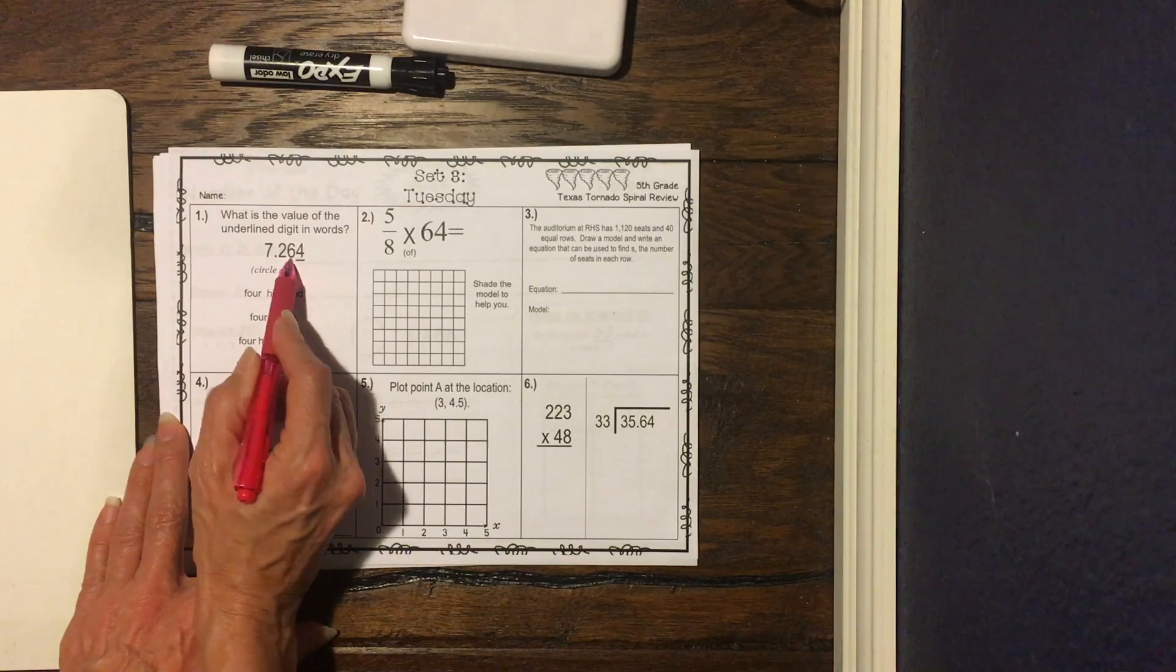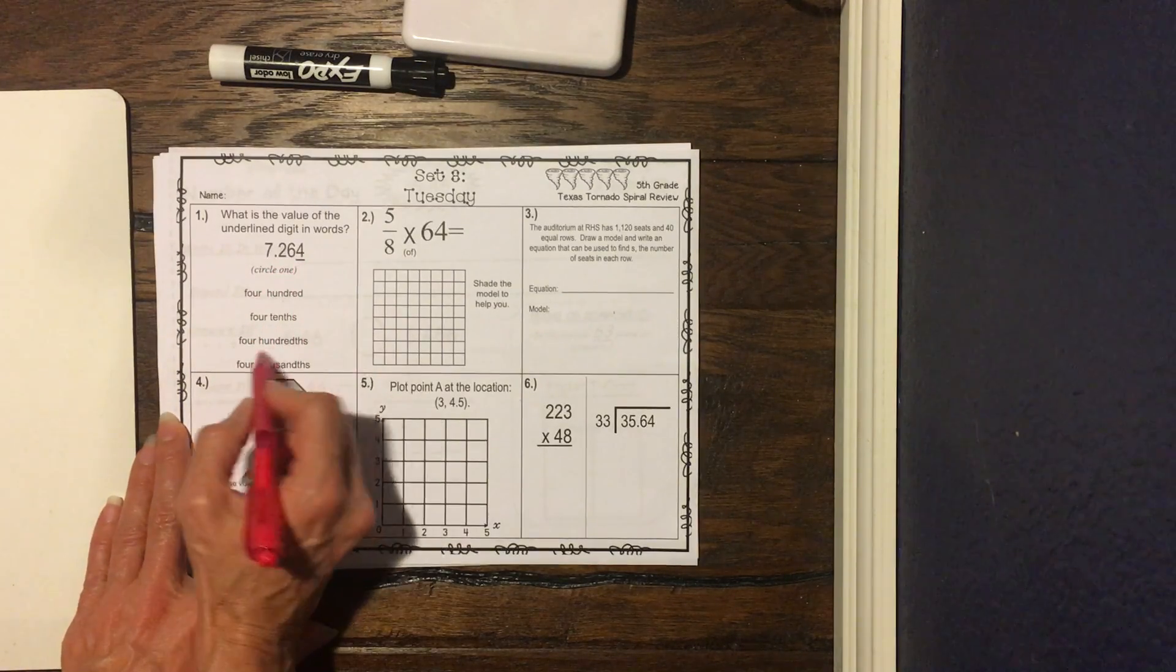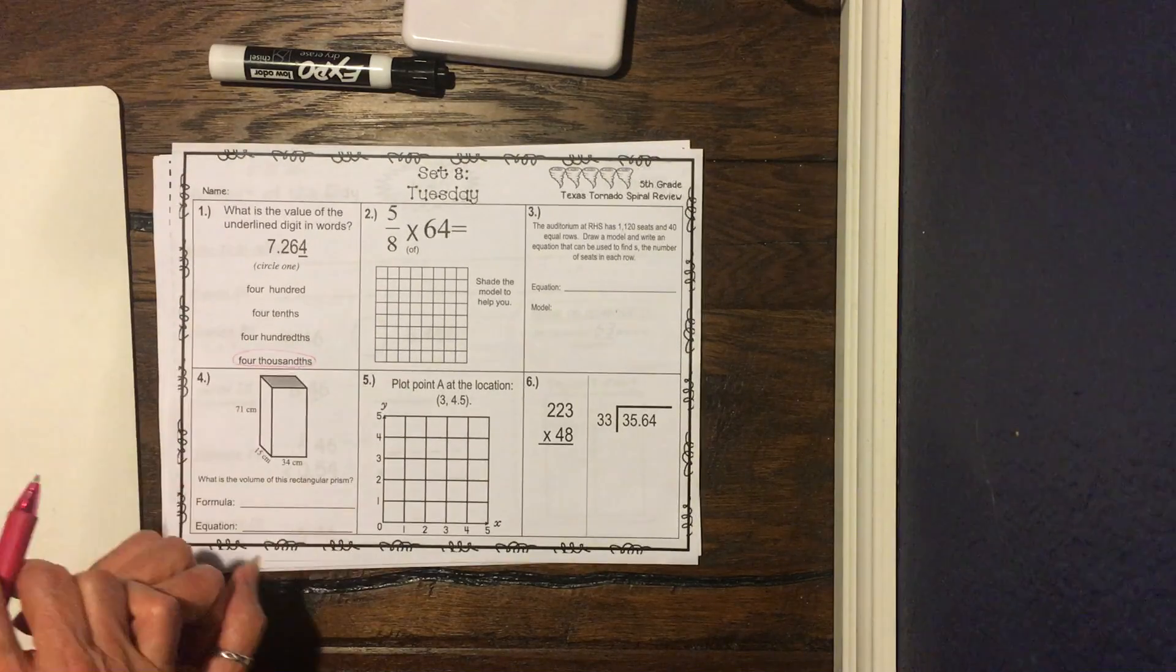So when we look down here, we have 400. It's not hundred. Hundred is a whole number, it would be over here. Four tenths, that's the tenths place. Four hundredths, that's what we're looking for, the D with a TH, and then this is four thousandths. So this would be the correct answer.